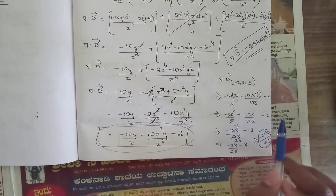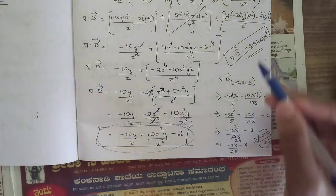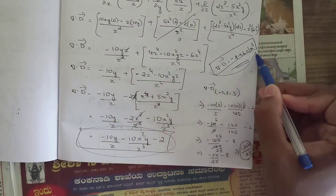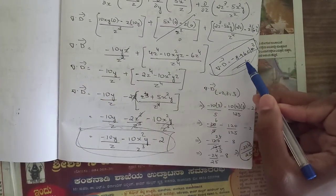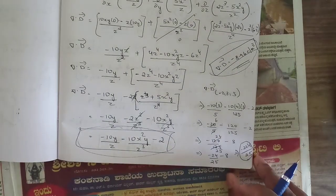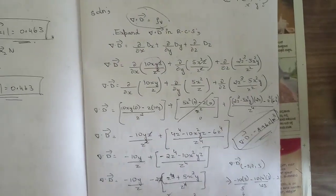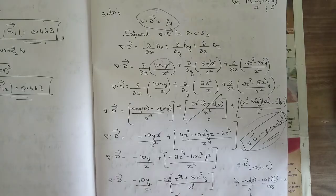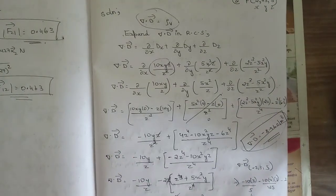Substituting the point values x = -2, y = 3, z = 5 into the simplified del·D expression gives the final answer of -8.96 coulombs per meter cube. This completes the first sub-case of the divergence problem.